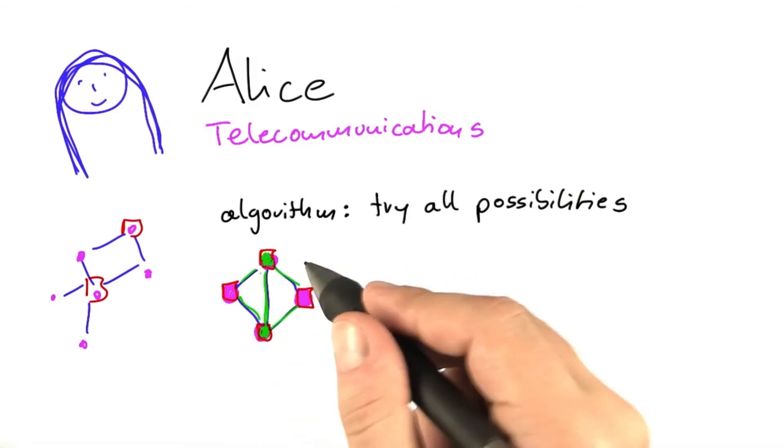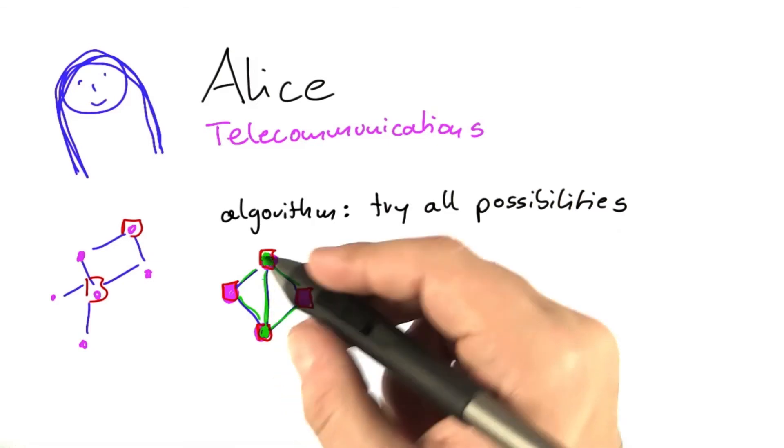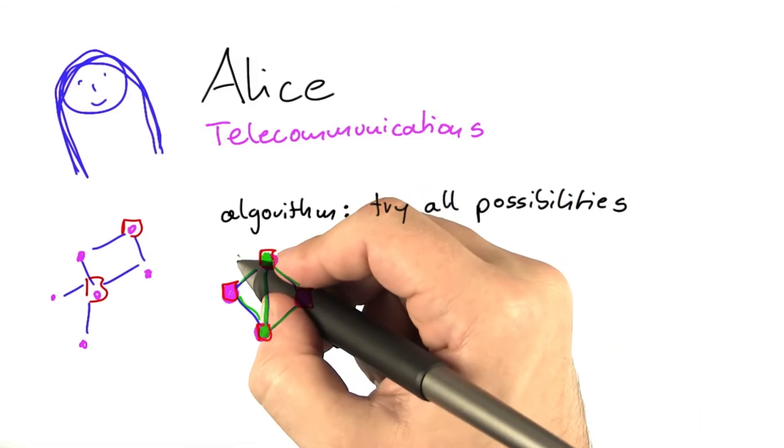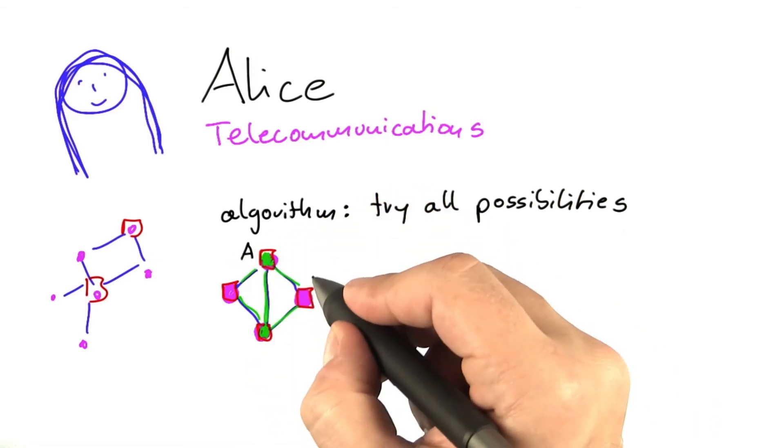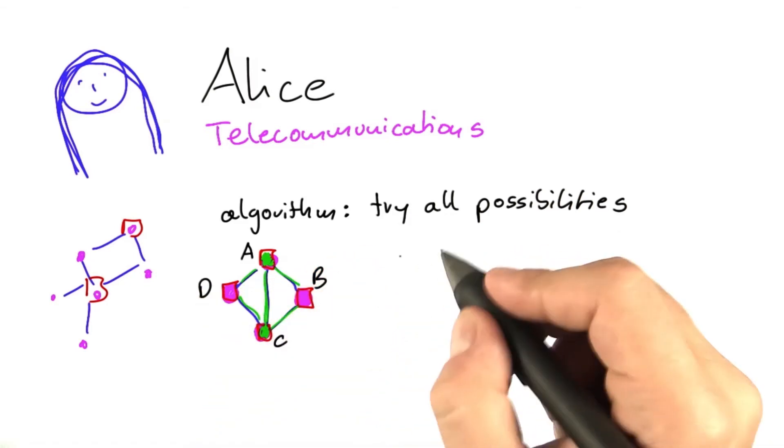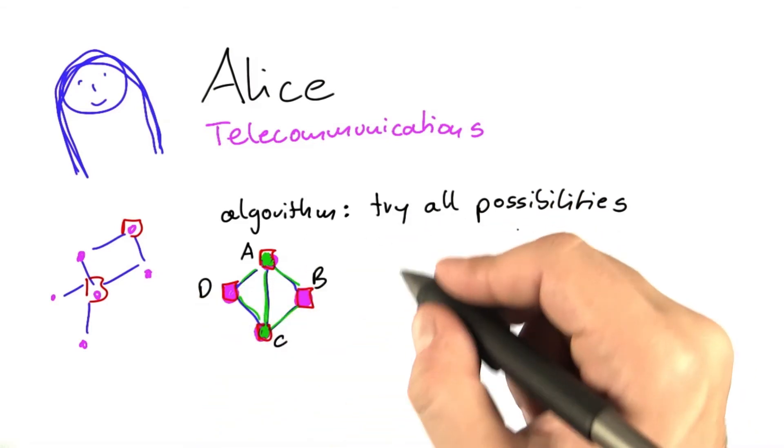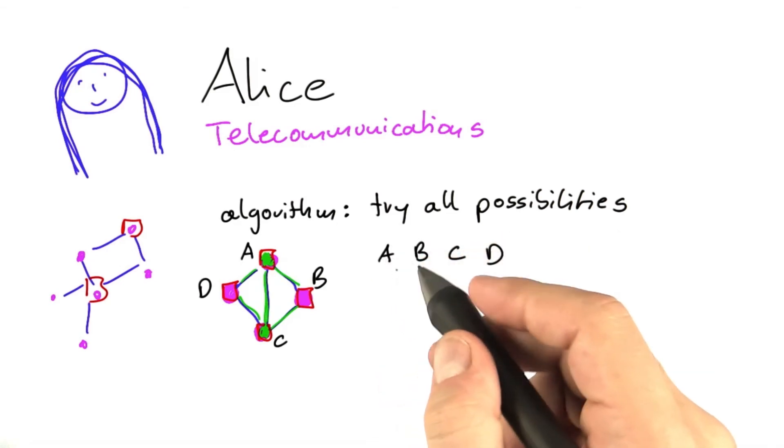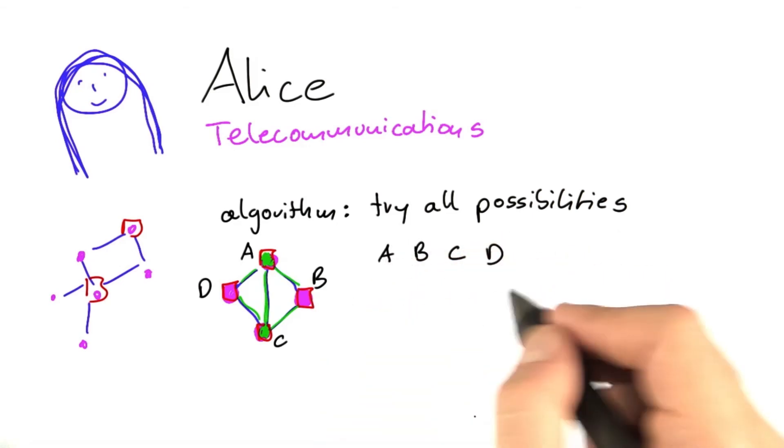So in this case here, that would actually be 16 different possibilities. If we give the communication points little letters here so that we can better distinguish them. So Alice's algorithm trying all possibilities would have to consider installing no device at all,